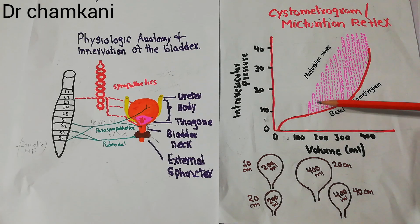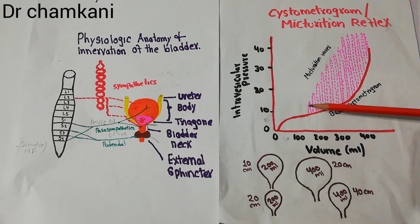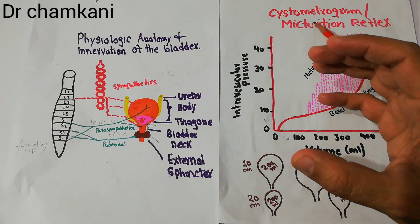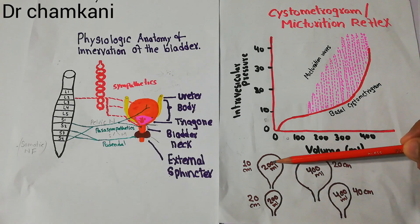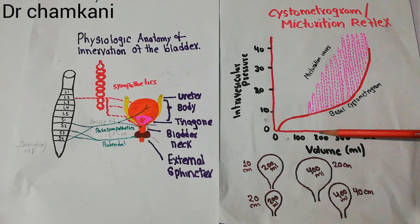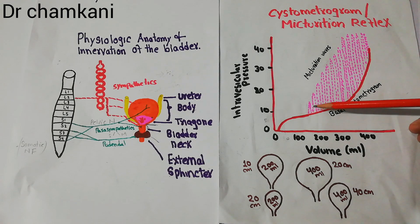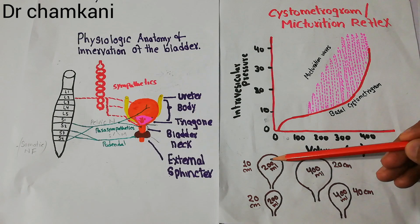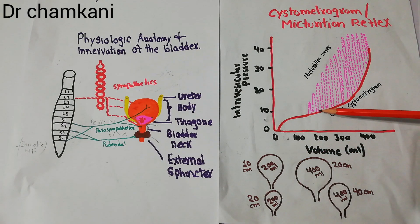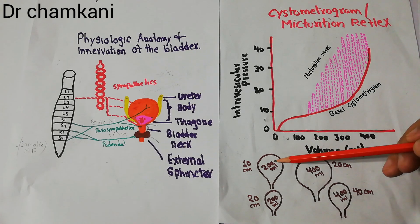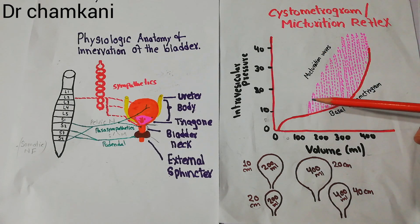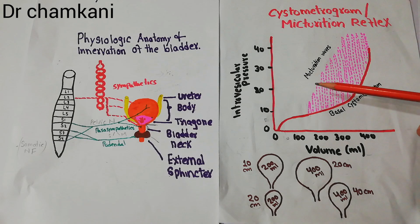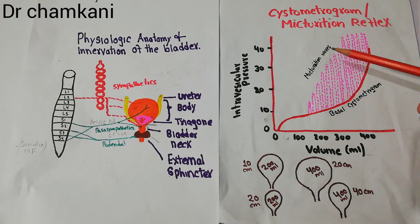On top of this baseline pressure, there are some acute waves which keep on occurring at every level of volume. These acutely increase the pressure in the urinary bladder and compel the bladder to contract. At 200 ml, the baseline pressure may be around 10 cm of water, but when a micturition wave occurs, the pressure goes up to 20 cm of water — the volume remains the same at 200 ml, but the contraction power increases momentarily. This acute increase in the contraction power of the urinary bladder is the micturition wave or micturition contraction, and these are caused by the micturition reflex.